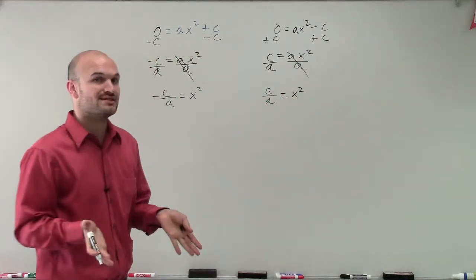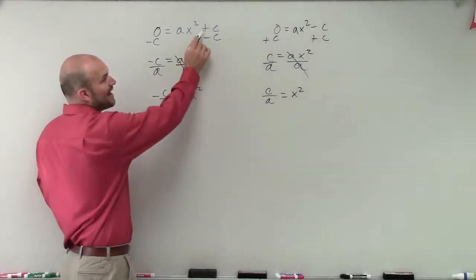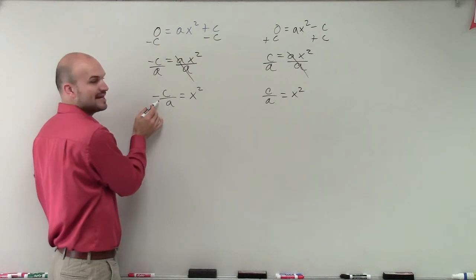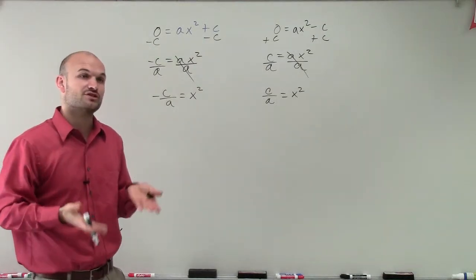And that's very important, because when we look at a problem when we're solved by the square root method, if we have plus, that means I'm going to be taking the square root of a negative number, which is going to produce our imaginary solutions of i.